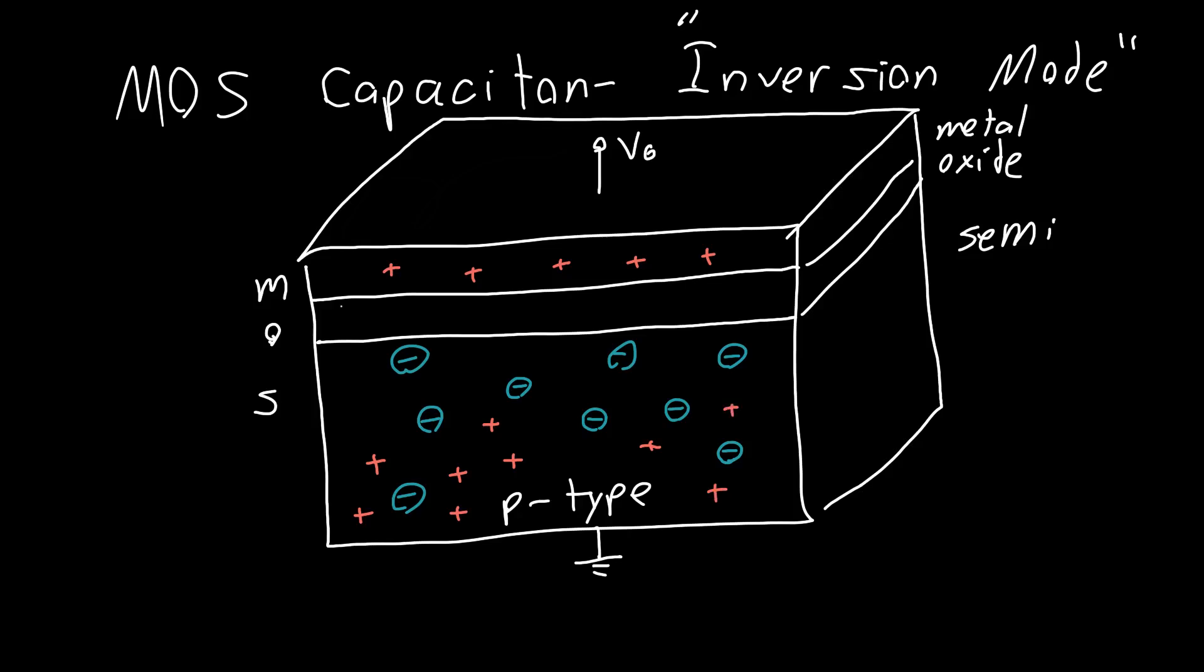But what happens if we keep increasing the voltage? Turns out we will actually start to attract electrons to the surface. So we will have not only this depletion layer that's formed with these negatively charged ions, but we've also got a ton of electrons near the surface now. That's kind of weird, that's very weird.